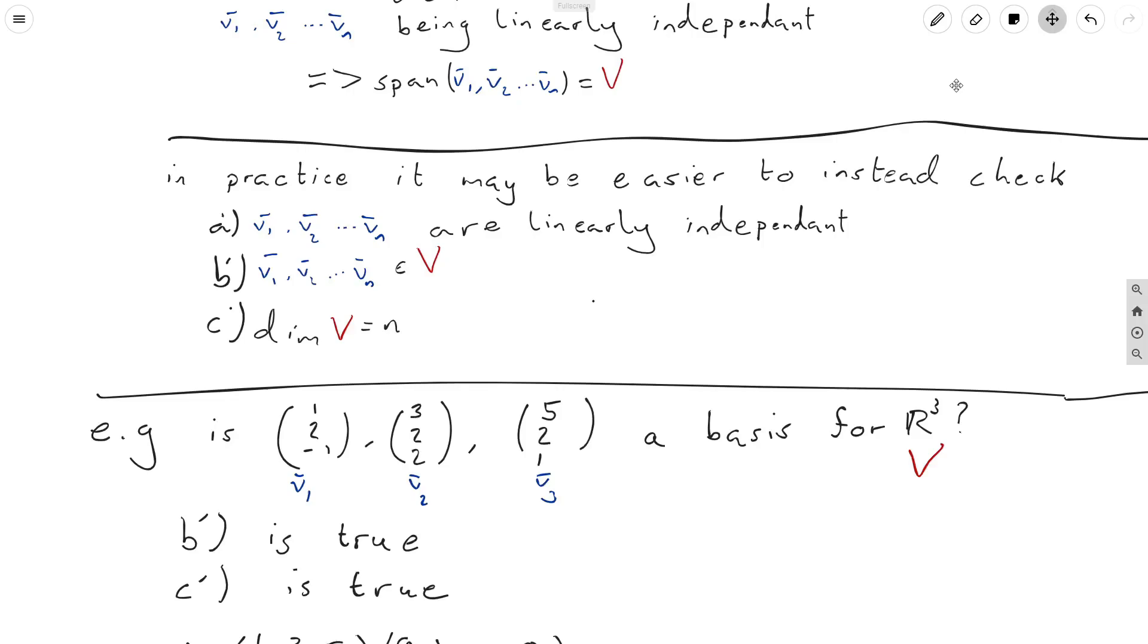c prime is true because the dimension of V is equal to n. Well, R³ clearly has three dimensions, and we have three vectors here. So therefore, in our case, n is equal to 3, and the dimension of R³ is indeed 3. So b prime and c prime are definitely true. So we only need to check a prime.